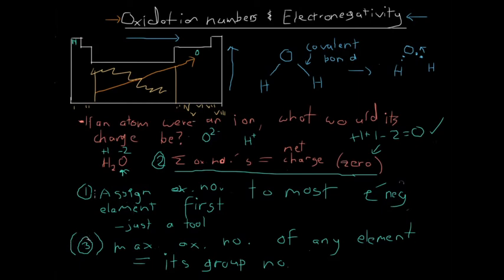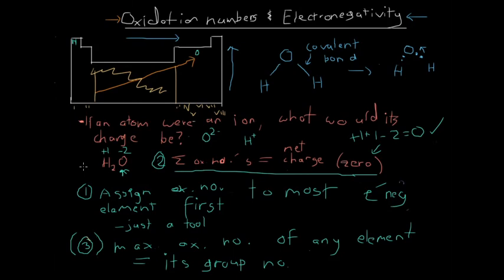So those are the two main steps: do the most electronegative elements first and assign them their oxidation numbers based on whatever their charge is when they form an ion - in this case oxygen forms an oxide ion with a charge of two minus, giving an oxidation number of minus two. Then fill in the rest such that the sum of the oxidation numbers equals the net charge of the compound. Examples are pretty crucial on this topic, so you really understand how to go about figuring out oxidation numbers of all the atoms in a compound.